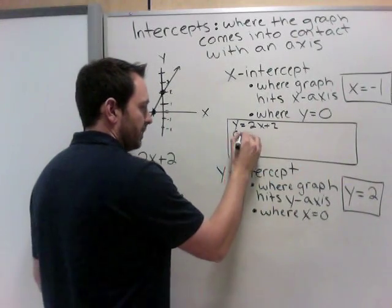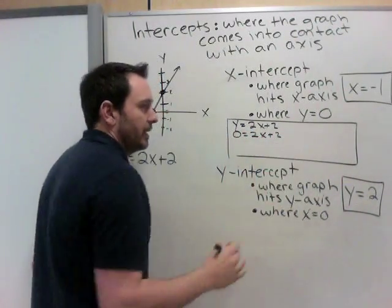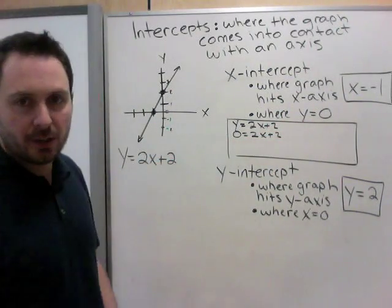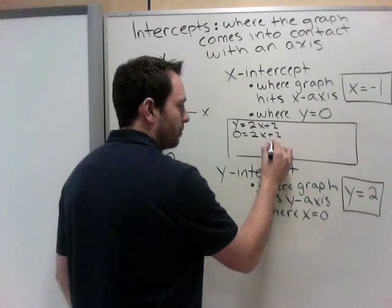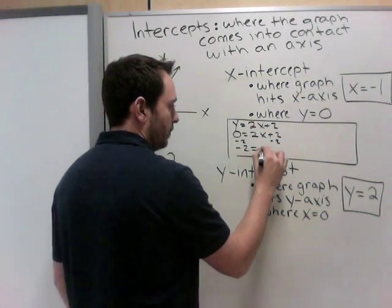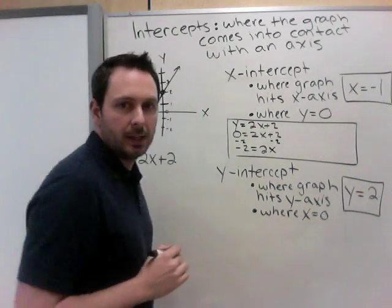And I need to find where y equals 0. So 0 equals 2x plus 2. Because I said, where does y equal 0? There's a y. Turn it into 0. Now, get the x alone. Subtract 2 from both sides. And I get negative 2 equals 2x.